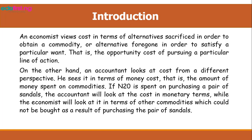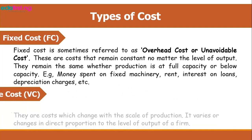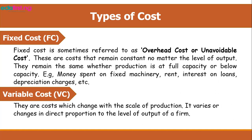The accountant sees cost in terms of money cost — that is, the amount of money spent on commodities. For example, if 20 naira is spent on purchasing a pair of sandals, the accountant looks at the cost in monetary terms, while the economist looks at it in terms of other commodities which could not be bought as a result of purchasing the pair of sandals. We have different types of cost.